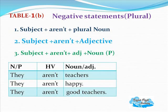Table 1b — negative statements in plural: They aren't teachers. They aren't happy. They aren't good teachers. This is how negative statements are formed in plural.